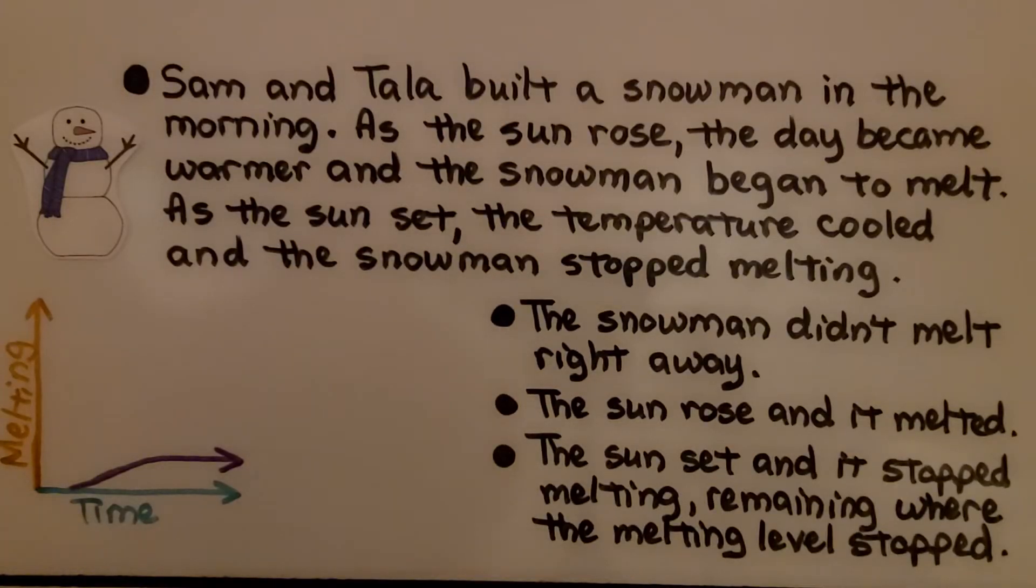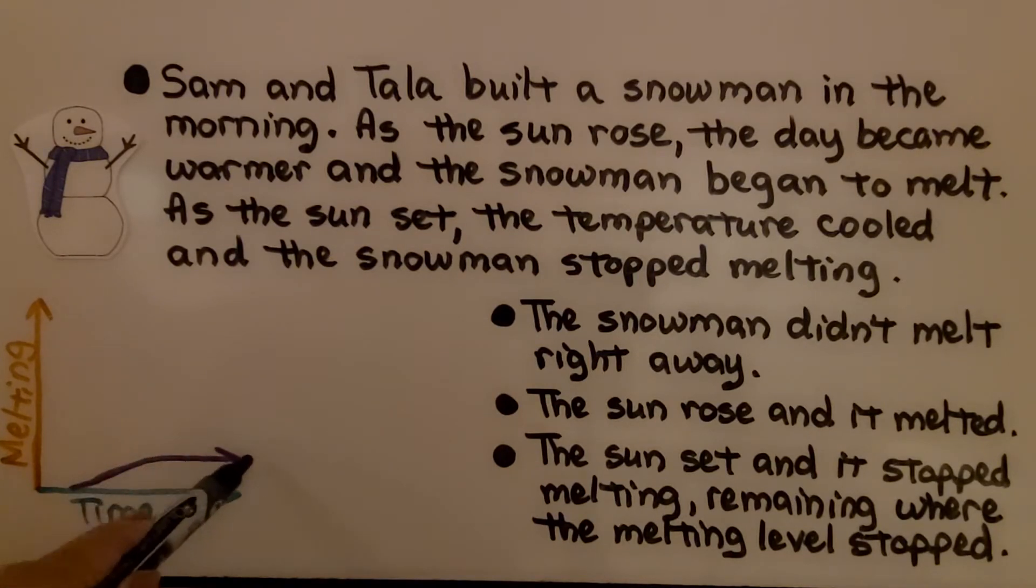Sam and Tala built a snowman in the morning. As the sun rose, the day became warmer and the snowman began to melt. As the sun set, the temperature cooled and the snowman stopped melting. The snowman didn't melt right away, so we're going to start the graph here. Then the sun rose and it melted, but then the sun set and it stopped melting and remained where it was.